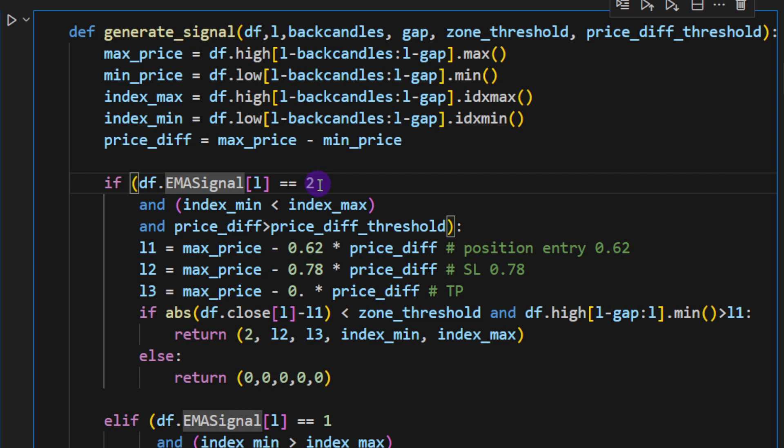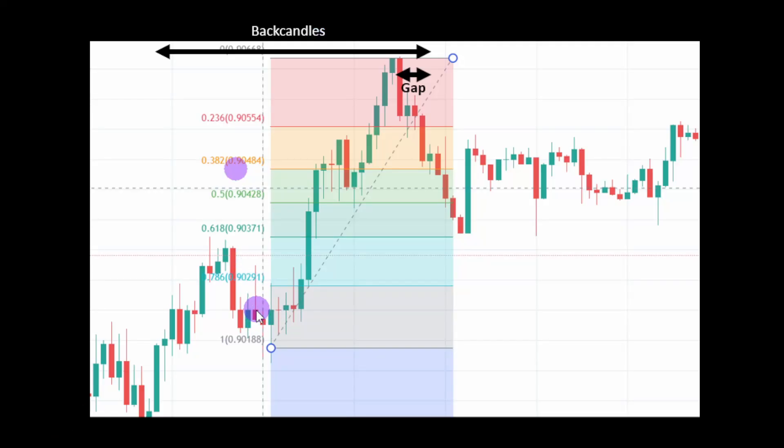In this example, to detect this pivot point, we need the total number of back candles, but we also need a small gap between the current candle and this pivot point to be able to detect this. Then we can set our Fibonacci levels and see if we can take any future positions when the price continues its movement.